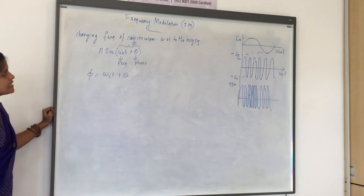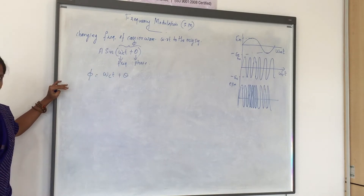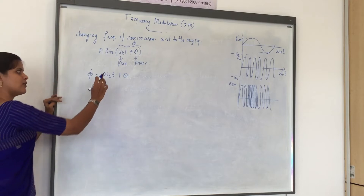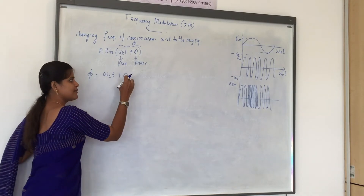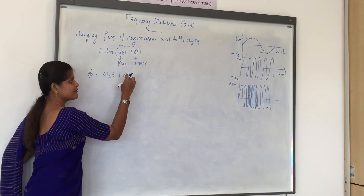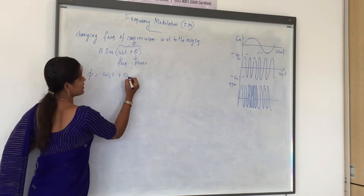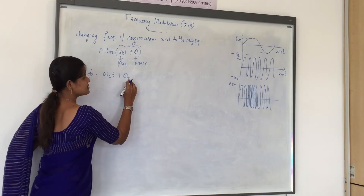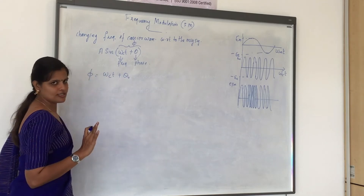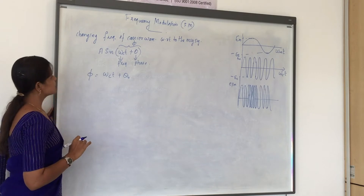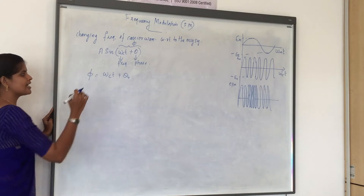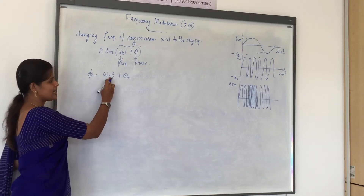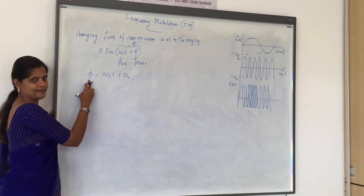Since it is frequency modulation, we are going to change only the frequency and keep the phase as a constant, marking it as θ₀ — it is just to denote it is a constant. So when we are varying the frequency, there will be a change in the angle phi.